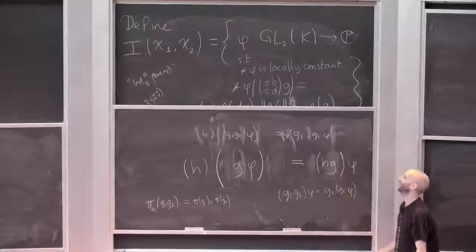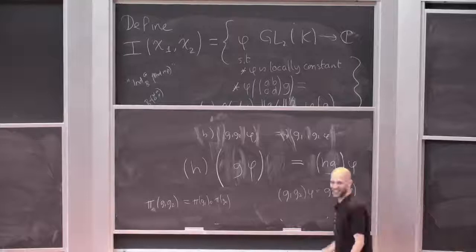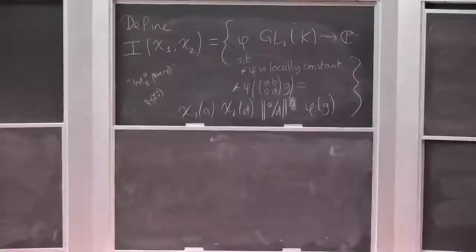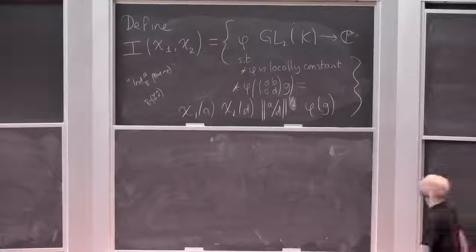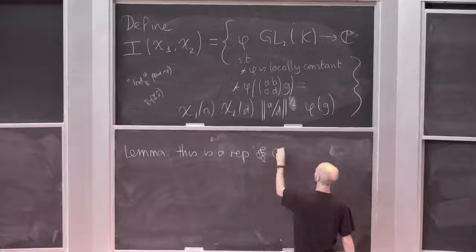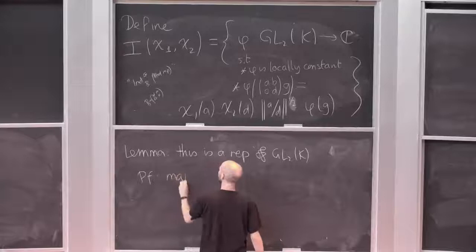It took me years to realize that that's the point — maps can go on the right, and sometimes it's a really cool idea. So that's the proof that this is an action. Lemma: this is an action, this is a representation of GL2(K). Proof: maps on the right.